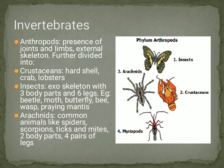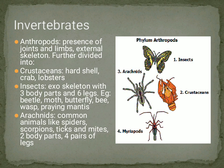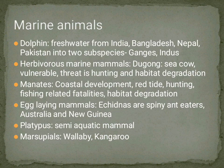Insects have a body divided into 3 parts — like praying mantis, butterfly, moth, and beetle. Arachnids have 4 pairs of legs and 2 body parts, like spiders. After invertebrates, we have the Gangetic dolphin, which is found in freshwater in India, Bangladesh, Nepal, and Pakistan. There is a threat from fishing and habitat degradation.